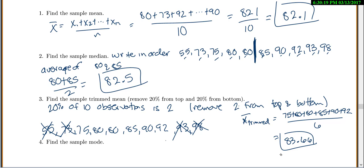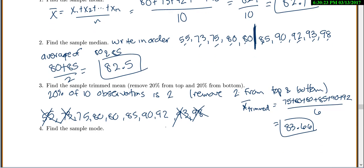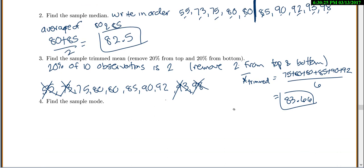So far I have my average is 82.1, my median is 82.5, and my trimmed mean is 83.66. The trimmed mean doesn't really come up that often, but it can be useful if you kind of have some weird values. And find the sample mode. The mode is what value do you see the most? Look at them when they're all in order. I see two 80s, so that's the most common value, so 80 would be my mode.